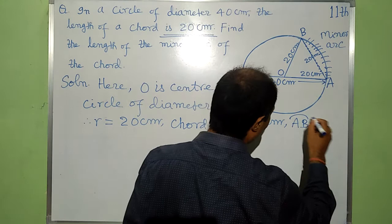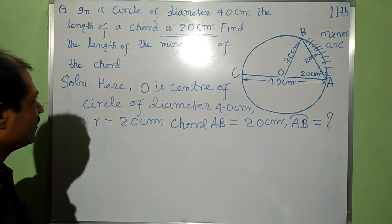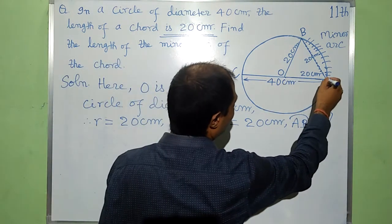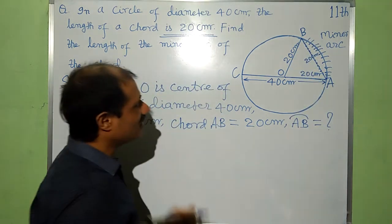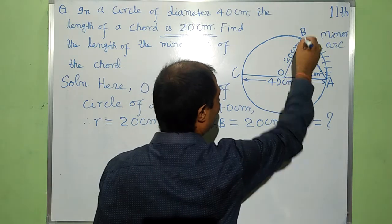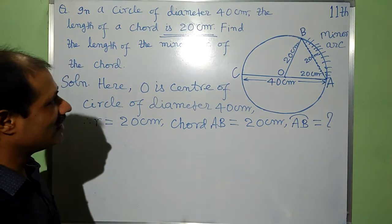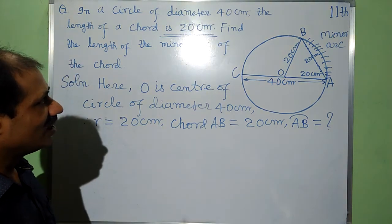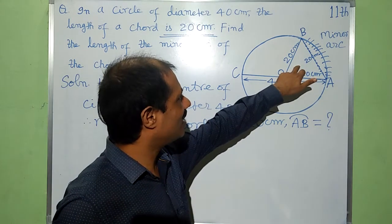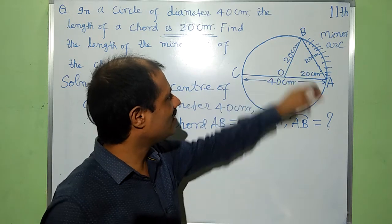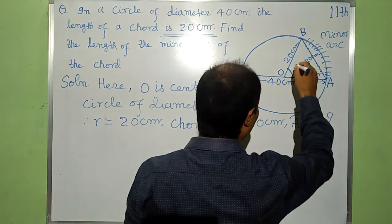Arc AB is equal to what? This part is unknown. OA is 20 cm, AB is also 20 cm, and OB is also 20 cm. That is also radius of the same circle. In this way, we get here an equilateral triangle. A triangle having all sides equal. It means this angle will be 60 degree.